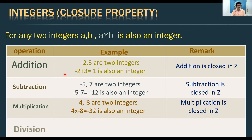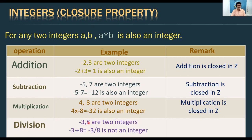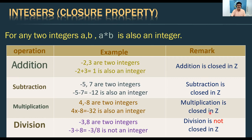For division in integers: take −3 and 8. −3 ÷ 8 is not an integer — it is a rational number. So division is not closed in Z. Summary for integers: addition — yes, subtraction — yes, multiplication — yes, division — no. Closure property is not satisfied for division.